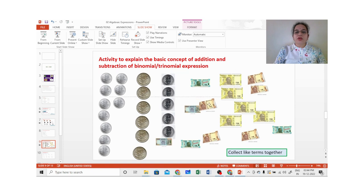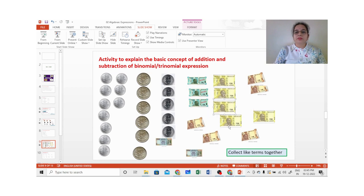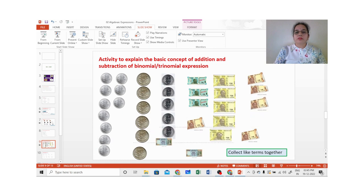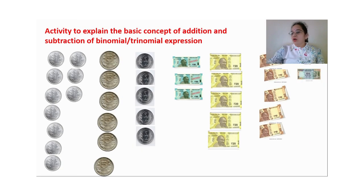Here is a 50-rupee note — collecting 50-rupee notes together: one note, and another 50-rupee note. Now collecting 20-rupee notes together. Then the 10-rupee notes are also collected. Finally, the 100-rupee notes are collected in this way.